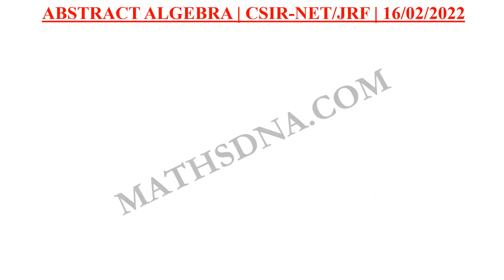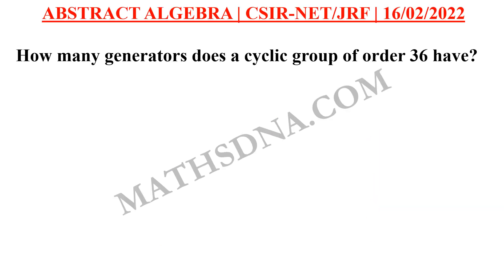Moving on to the question. The question is: how many generators does a cyclic group of order 36 have? The options are A) 6, B) 12, C) 18, and D) 20.